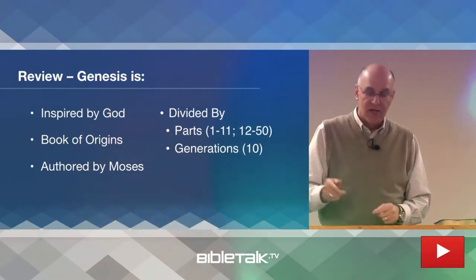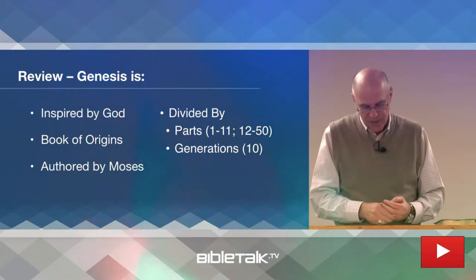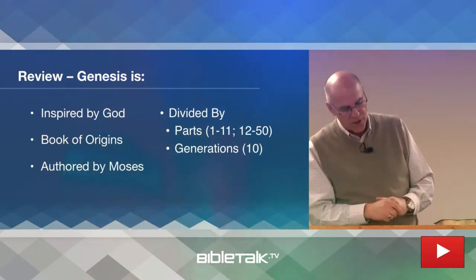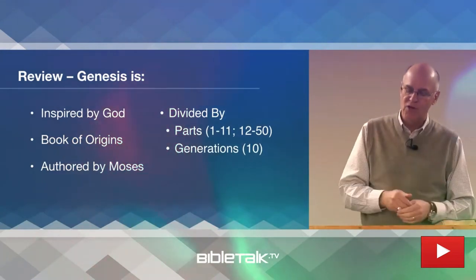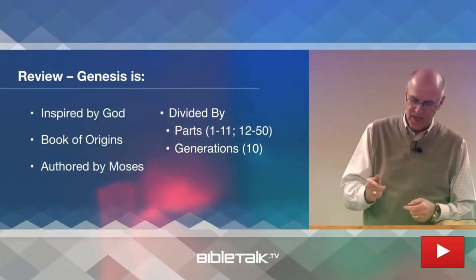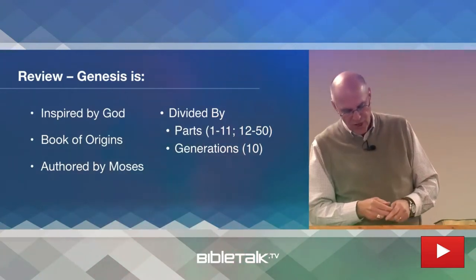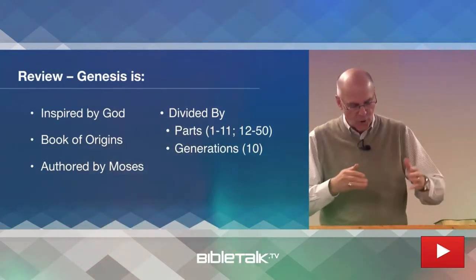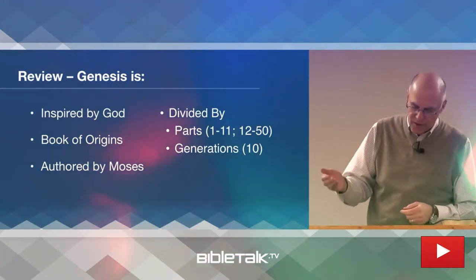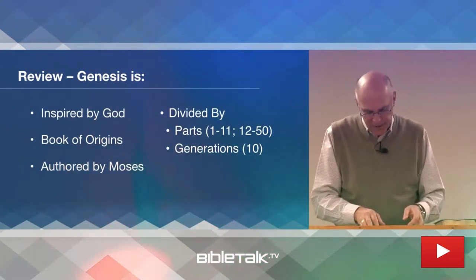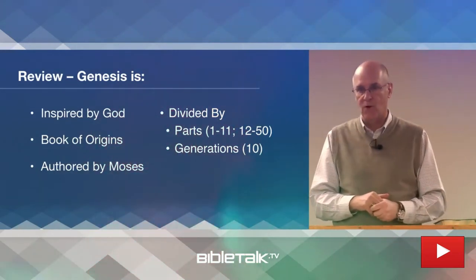There's another, more natural way to divide Genesis, and that's by generations — ten generations. If you look through the book of Genesis, you see that there are ten generations beginning with Adam and ending with the sons of Jacob. Each one of them recording and preserving and handing down their records, which were compiled and edited eventually by Moses, under the guidance of the Holy Spirit.